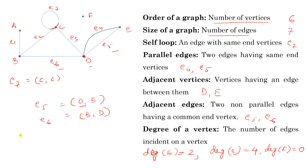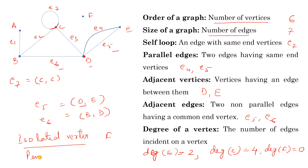An isolated vertex is a vertex on which no edge is incident. For example, F is an isolated vertex because no edge is incident on it.